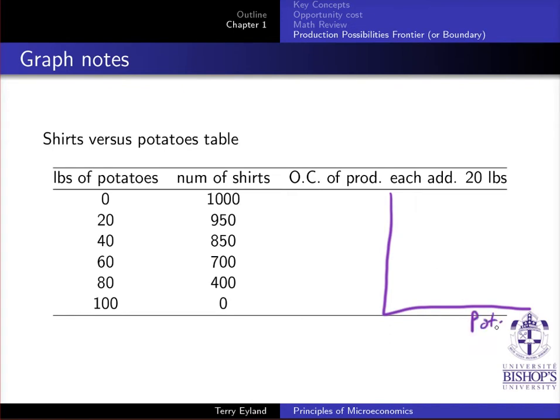we're just going to put potatoes down here and shirts up here. The maximum amount of shirts I could produce is 1,000. Maximum amount of potatoes is 20. If I produce 1,000 shirts, I have no potatoes. If I produce 20, oops, the maximum amount of potatoes is not 20, it's 100. If I produce 100 potatoes, then I get no shirts. So let's go for increments of 20. So 20, 40, 60, and over here, it's going to be 80 will be my situations here.